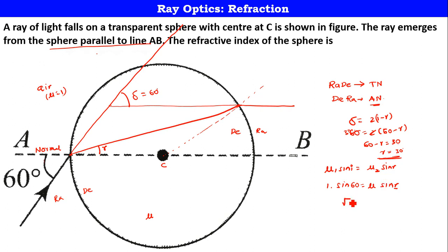Just substitute it here and you get the answer. Sin 60 is root 3 by 2. What is mu? That's what you need to find. Mu sine 30. Sin 30 is equal to 1 by 2. This 2, that 2 gets cancelled. The refractive index is nothing but root 3. This is how you can solve this problem.